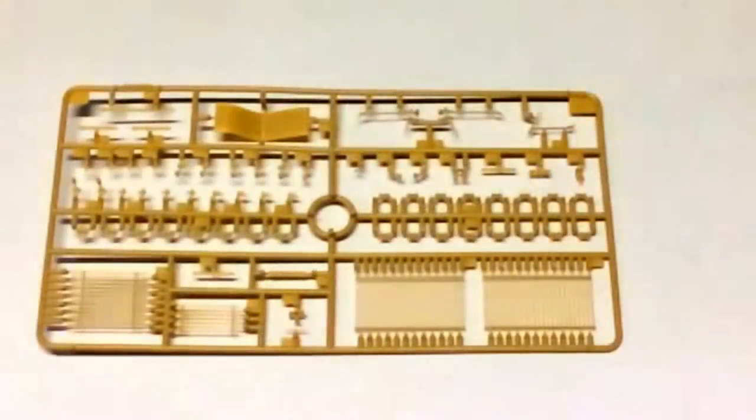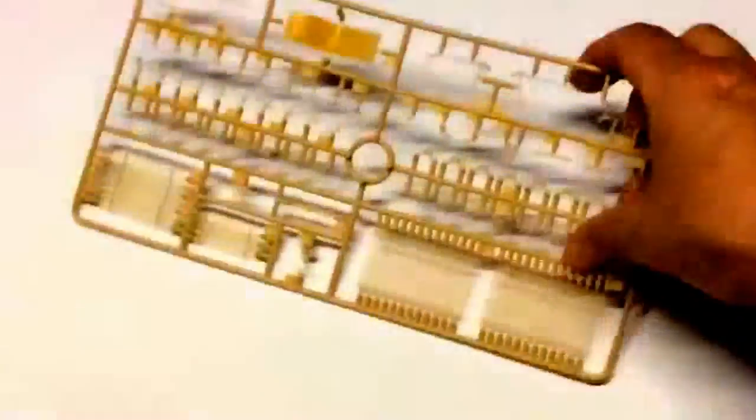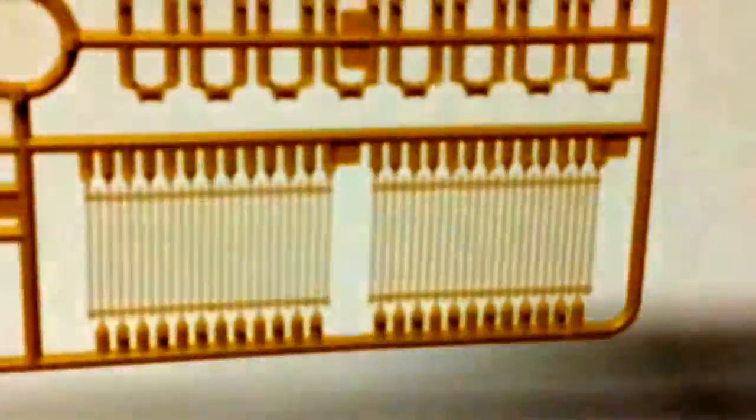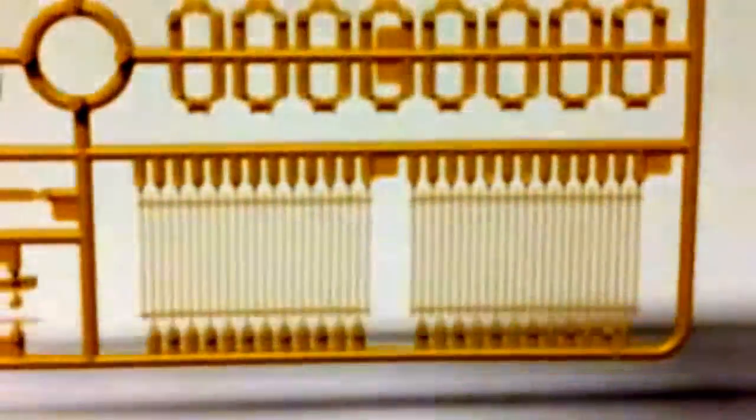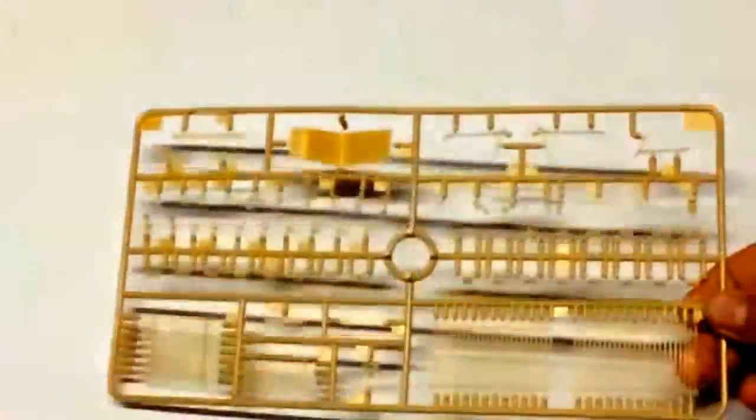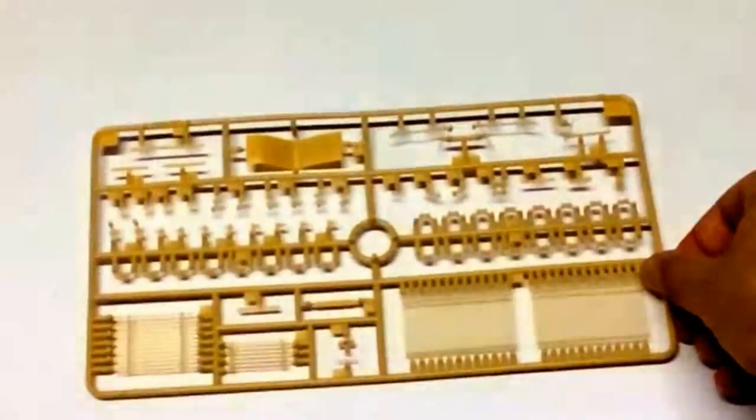You get two of these sprues and this is the first look at some of the slat armor. As can be seen they have used a lot of injection points. I'll try and bring this in closer to the screen and hope it focuses. That enables them to get a very thin cross section to the parts. It will look very realistic and be a lot easier to construct than the original.